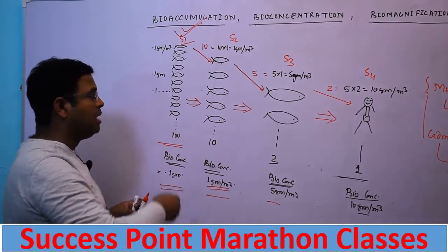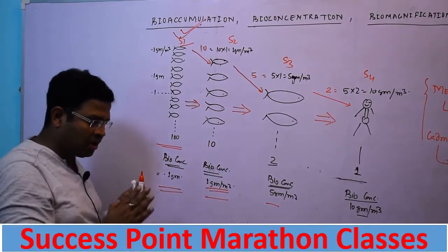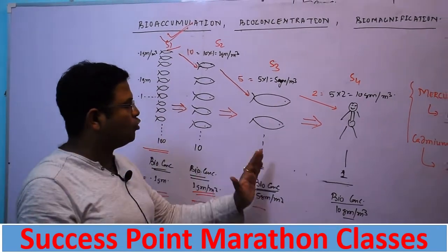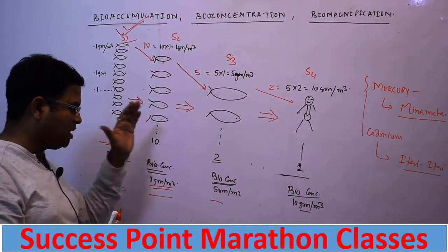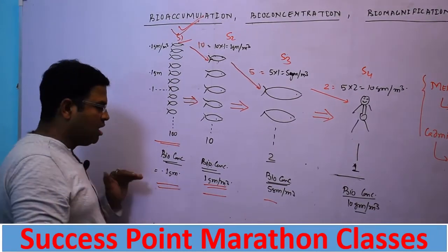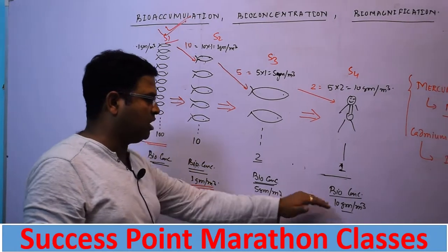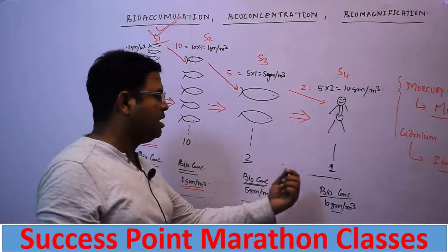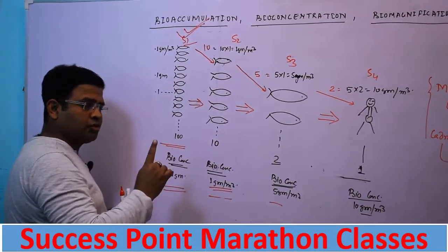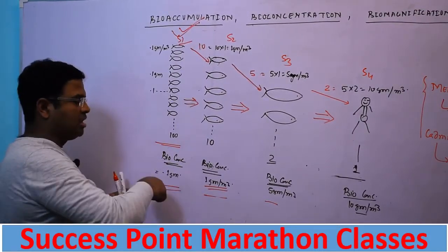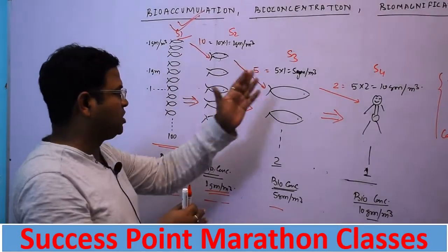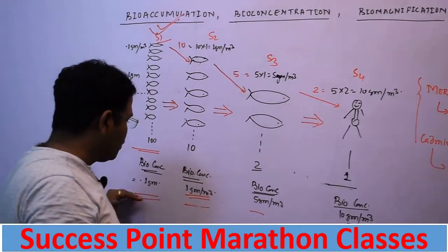At the first level of the food chain, when a non-biodegradable substance enters, it is known as bioaccumulation. The amount of non-biodegradable substance concentrated at each species level in the food chain is known as bioconcentration.